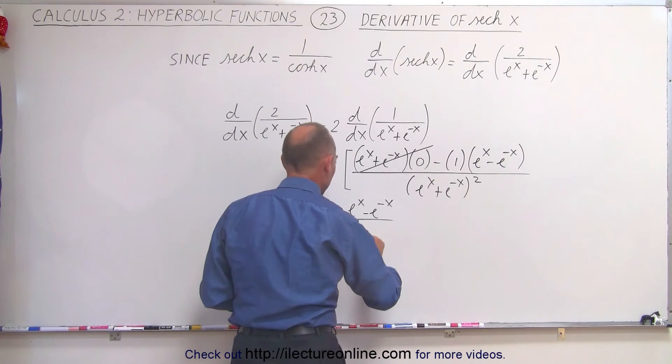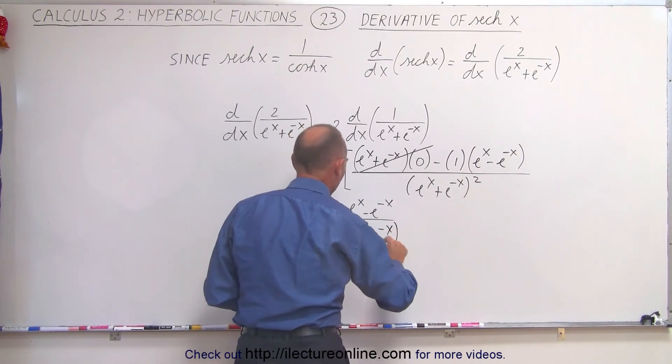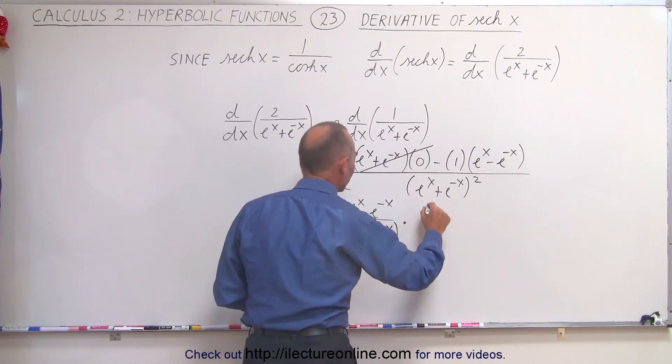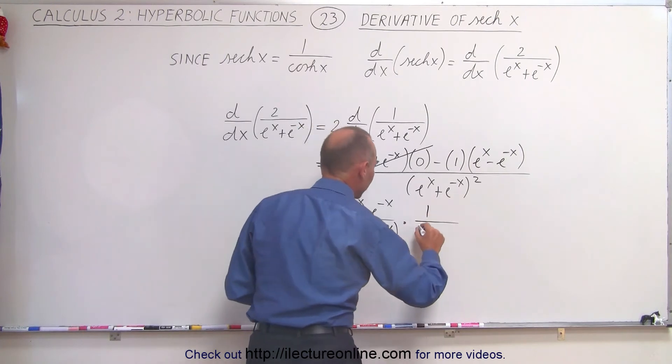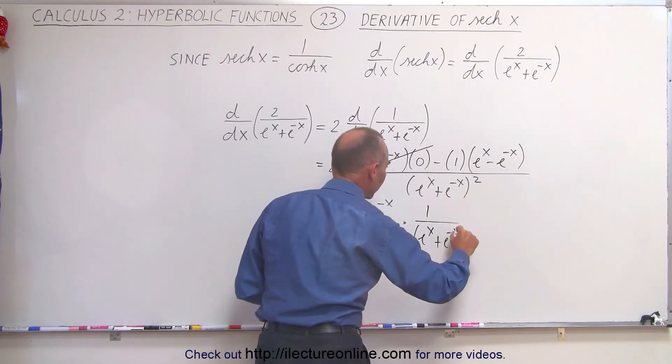I'm going to write this as e to the x plus e to the minus x, and then multiply that times 1 over and repeat this again as e to the x plus e to the minus x.